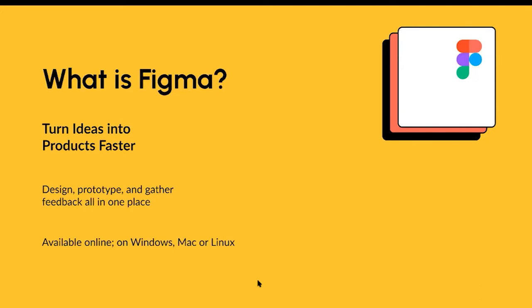This tool lets you design, prototype, and gather feedback all in a single app. It can be accessed online — all you need is a browser, whether Chrome, Safari, or anything else, as long as you have an internet connection. The beauty of it is you do not have to save your work; everything is automatically uploaded to Figma, so there's no risk of losing work from a dead battery or power outage. You can also download the desktop app on Windows, Mac, or Linux.